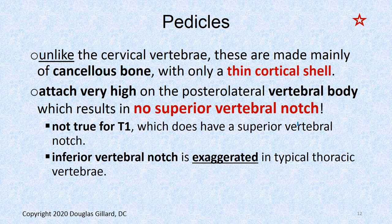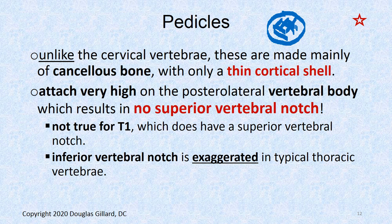The pedicles are weird. Unlike cervical vertebrae, they're made mainly of cancellous bone with only a very thin shell of cortex. The cortex is the compact tough outer bone; the inside is the cancellous trabecular system. The reason is that we've got ribs giving it extra strength. So the thoracic spine is a rare place to have serious injury because it's so supported by the ribs.